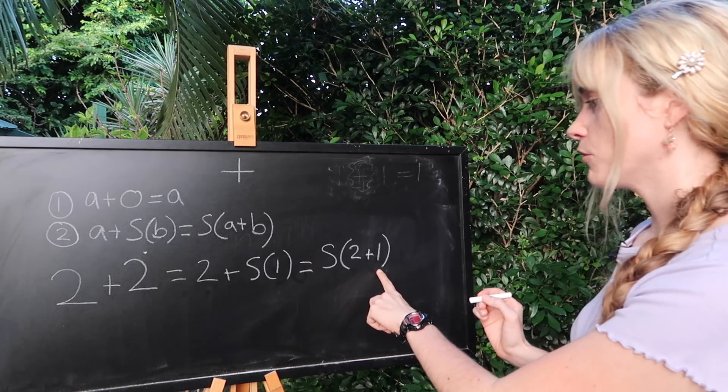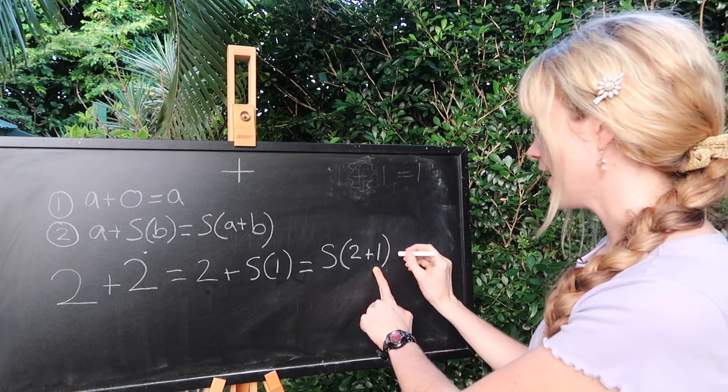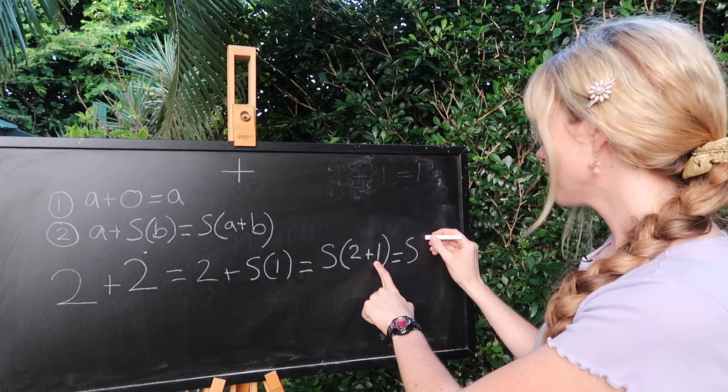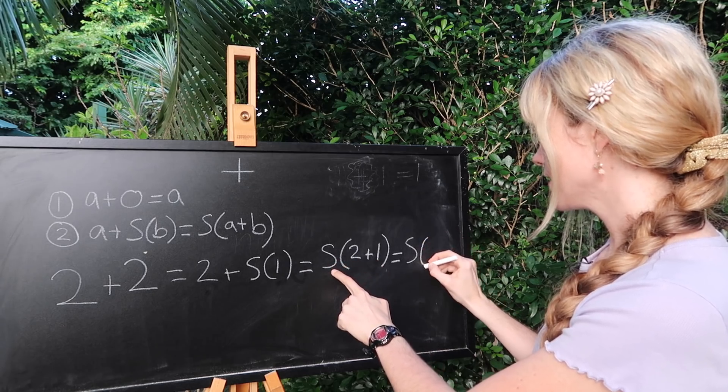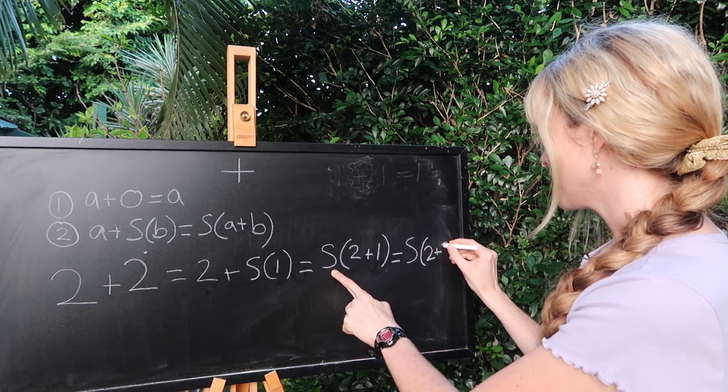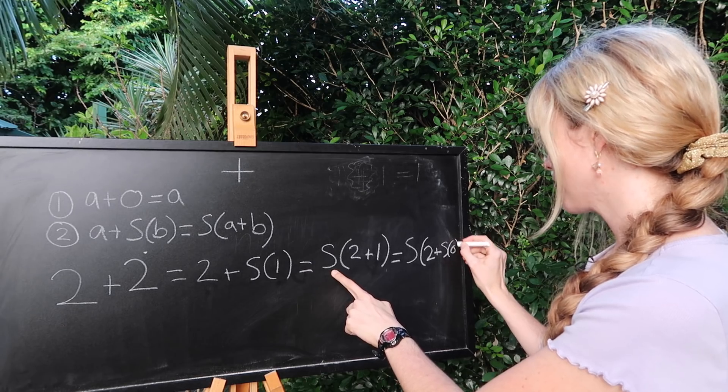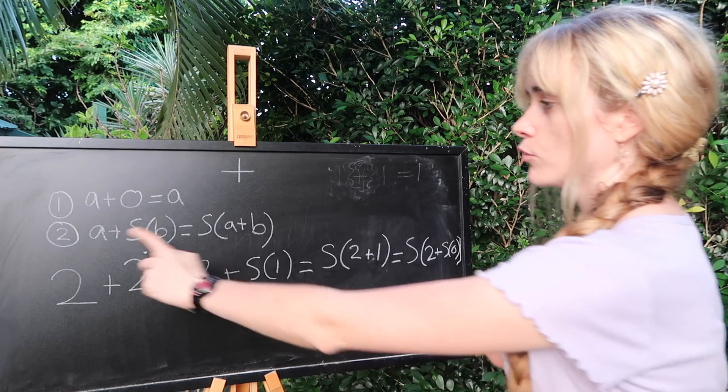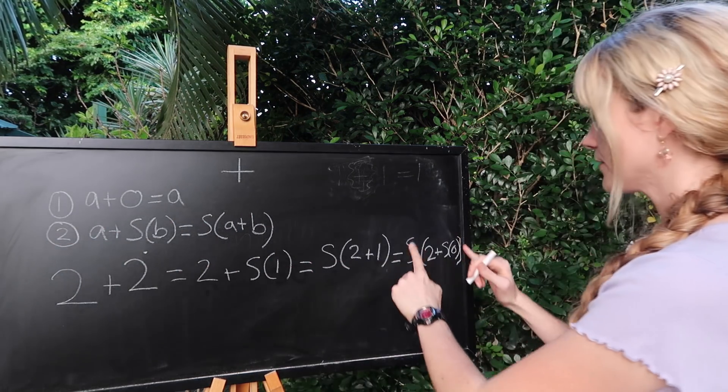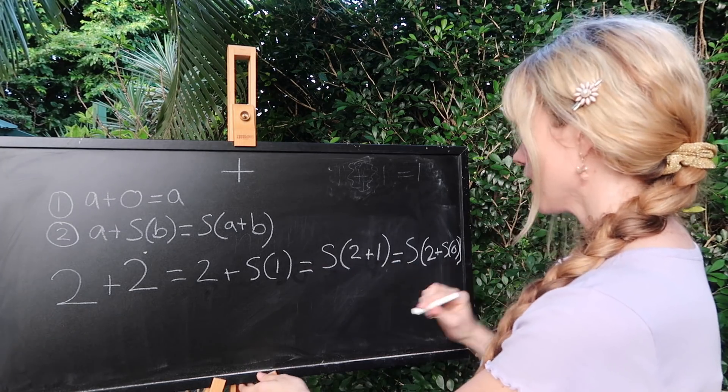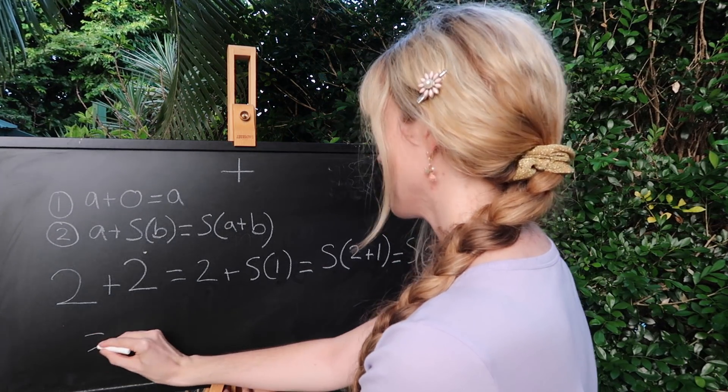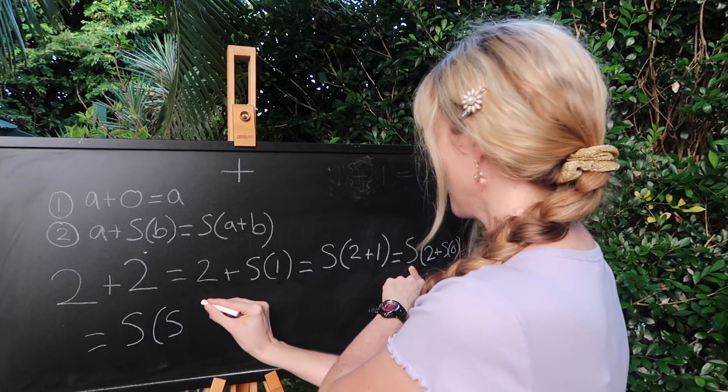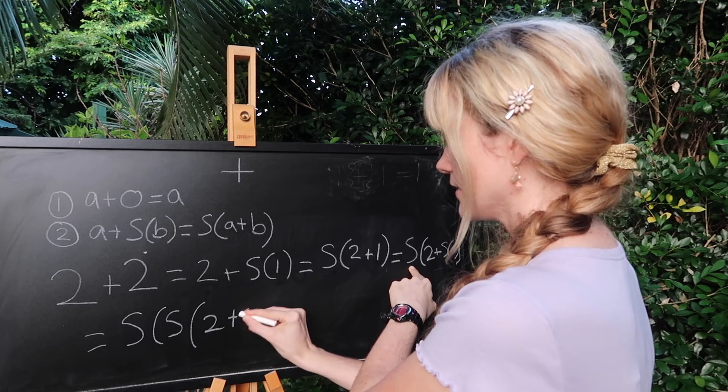Now let's think about what one was from before. What did we define that to be? We defined one to be the successor of zero. So we can rewrite this as the successor of two plus the successor of zero. Running out of room a little bit on the board here. Now we can employ rule two again and sort of rewrite our brackets in a way. So this is going to be equal to the successor of the successor of two plus zero.